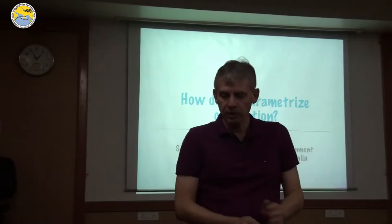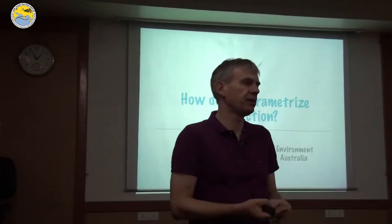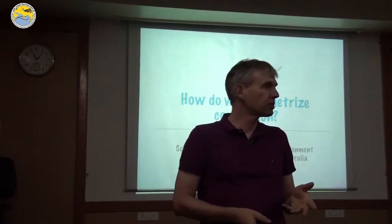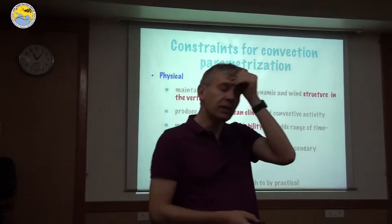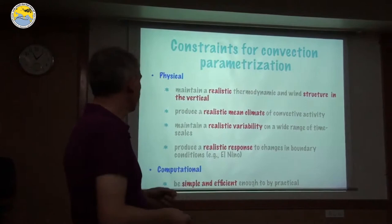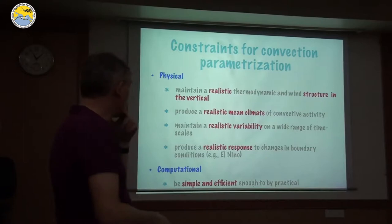We already know how convection works. We know it interacts with the largest scales, and we have already derived the equations as to what we need to represent. So now it's a question of how do we represent it. But before we do that, we have to think about what constraints we might have when thinking about convection parameterization — some things we want the parameterization to do.